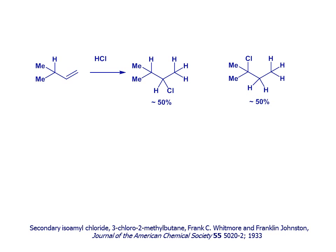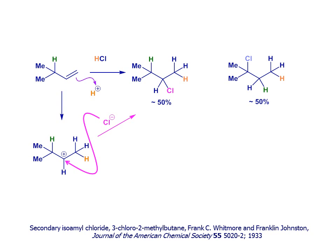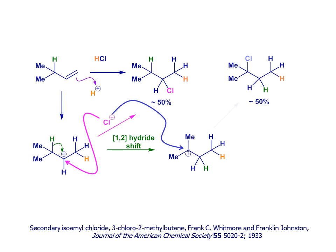Putting this idea into practice, have a look at this addition reaction of HCl with 3-methylbut-1-ene — two products are formed. The first product results from direct addition of HCl across the double bond, as we'd expect. Addition of the proton in the first step to the less substituted end of the alkene gives a secondary carbocation, which can react with nucleophilic chloride to generate that left-hand product. But there's an alternative pathway: if this carbocation intermediate undergoes a 1,2-hydride shift, then we generate a tertiary carbocation, and interception of this species by chloride gives us the second product.